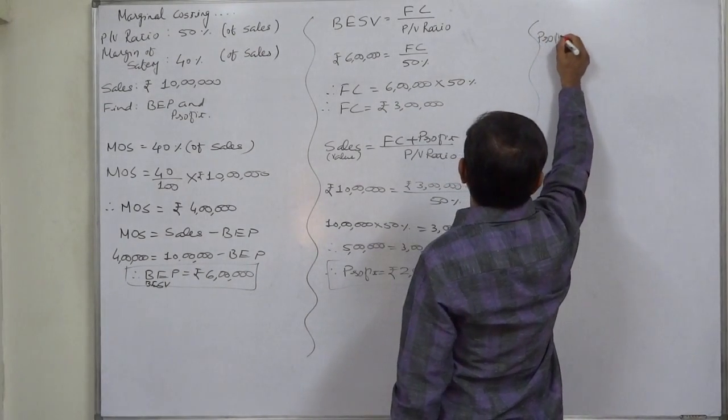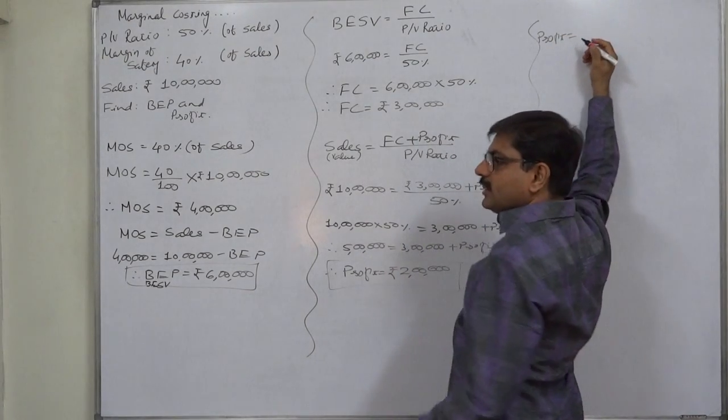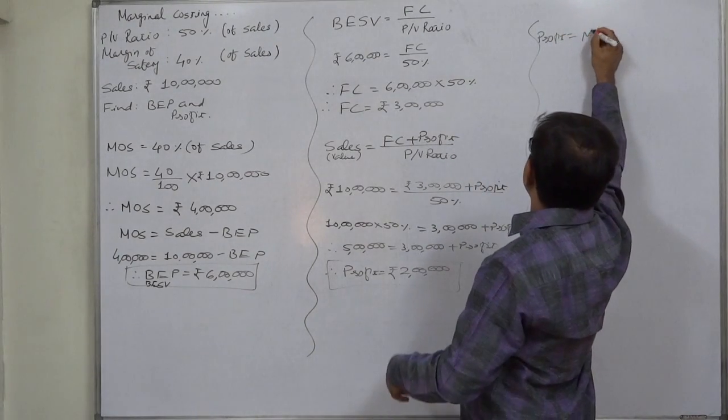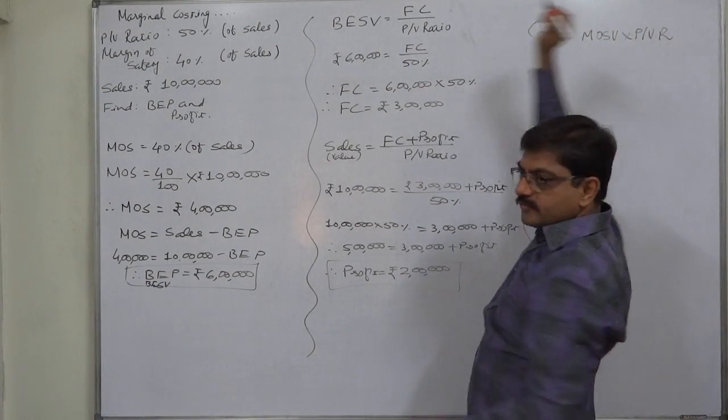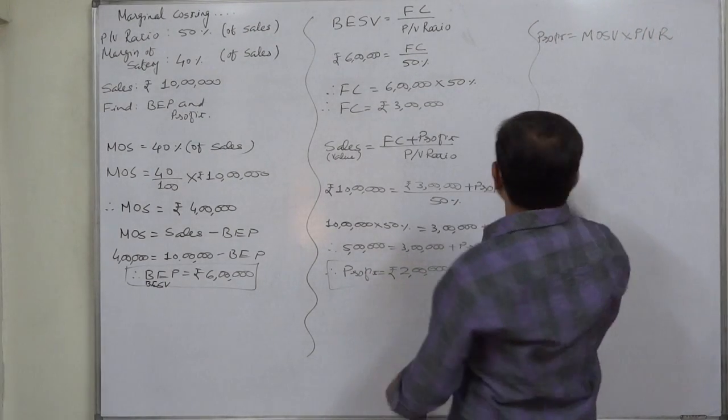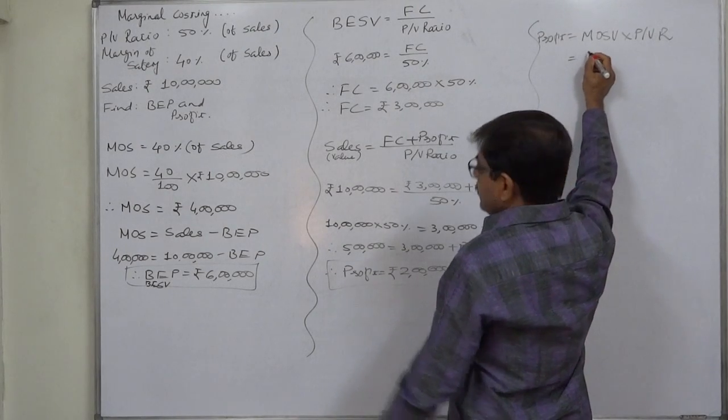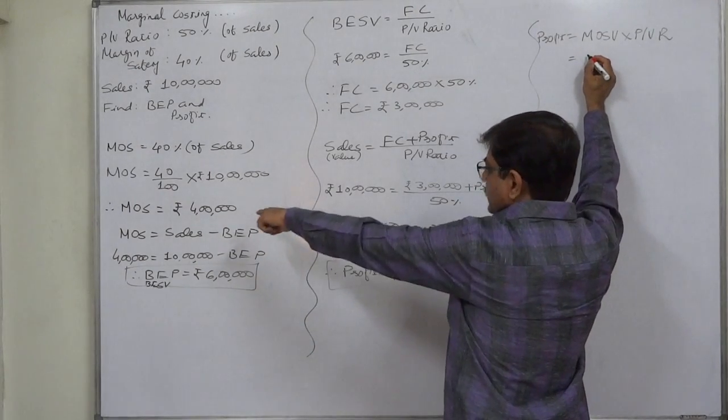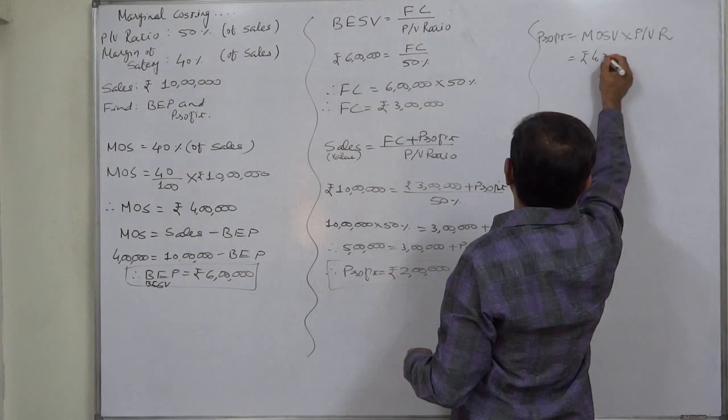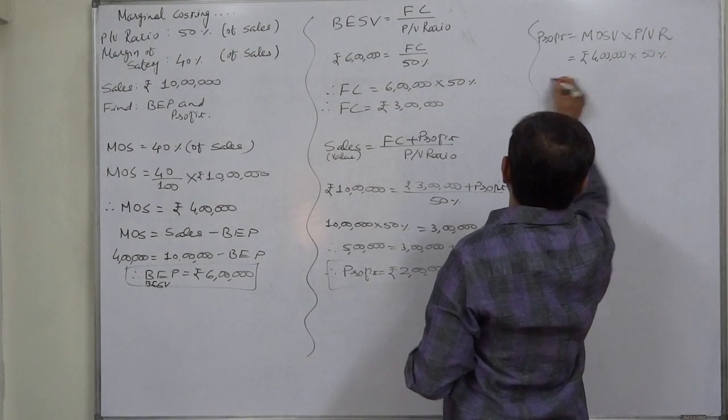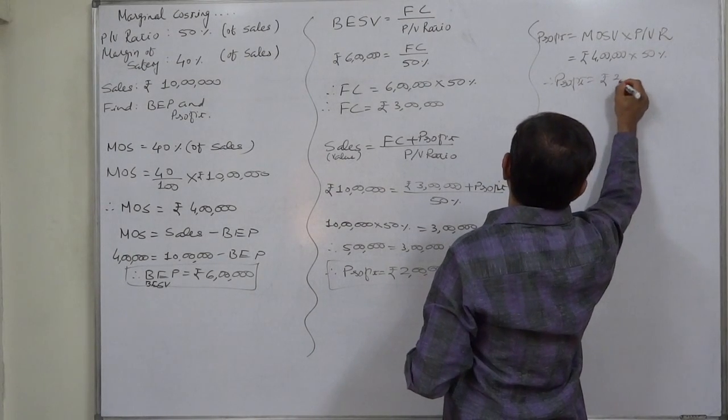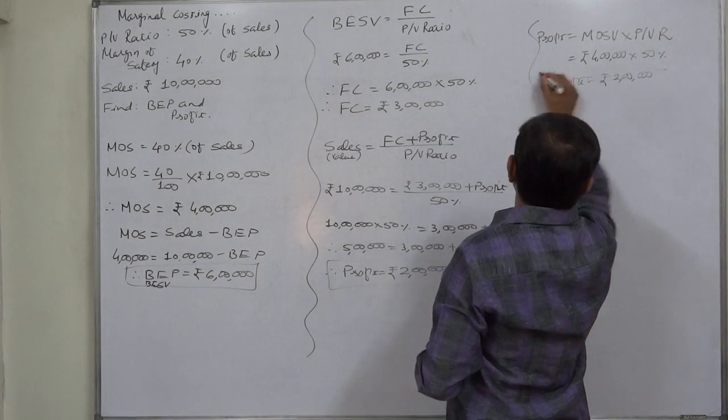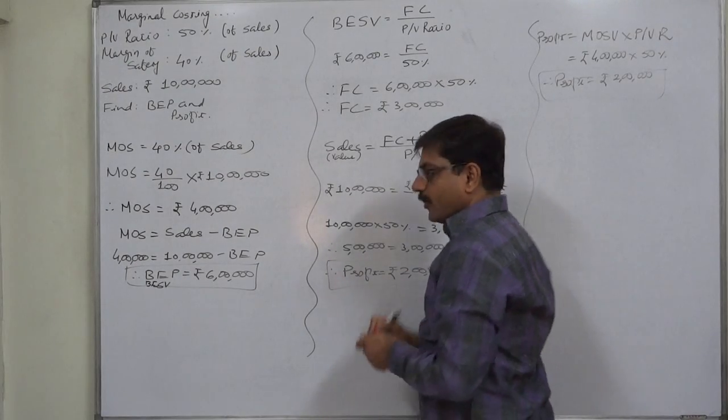What do we mean by profit? It is the contribution earned from margin of safety. So margin of safety value into PV ratio or margin of safety quantity into contribution per unit gives us profit. What is margin of safety? It is rupees 4 lakh. What is PV ratio? 50%. So profit is rupees 2 lakh or 200,000. This is also a way of calculating profit.